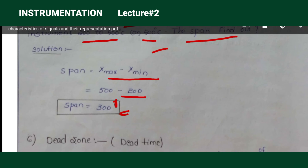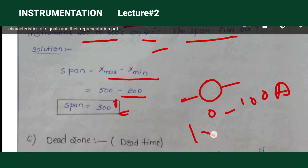Another static characteristic is dead zone, also called dead time. Dead zone is defined as the largest change of input for which the response of the instrument is zero. For example, if an ammeter is rated 0 to 100 amps and you give 1 milliamp, it won't give deflection — that is the dead time of that instrument.